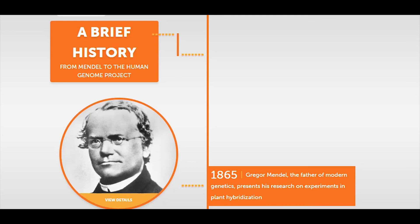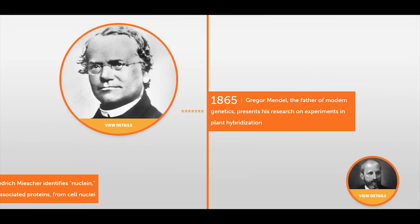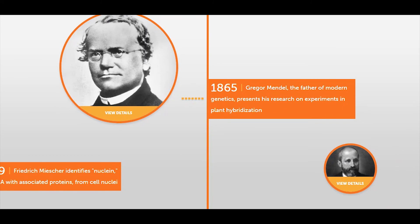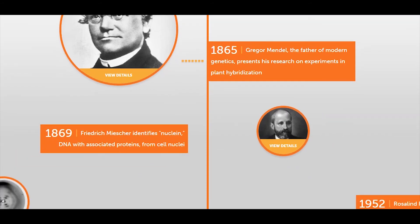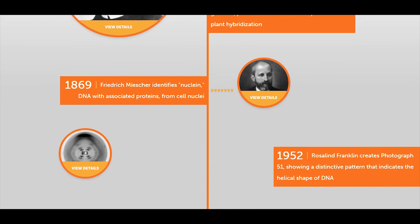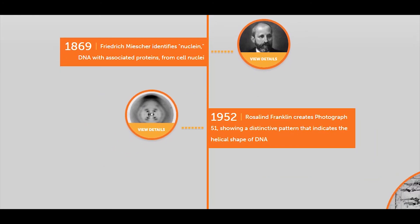Let's take a brief history of DNA, from Mendel to the Human Genome Project. In 1865, Gregor Mendel, the father of modern genetics, presented his research on experiments in plant hybridization. Mendel worked on pea plants and made big contributions to human genetics. In 1869, Miescher identified nucleic DNA with associated proteins from the cell nucleus.